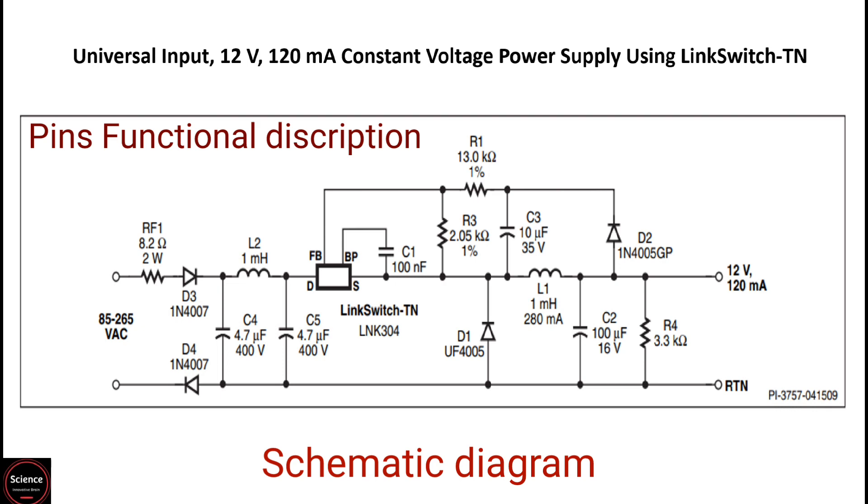On the bypass pin, a 0.1 µF external bypass capacitor must be connected for the internally generated 5.8V supply. During normal operation, switching of the power MOSFET is controlled by the feedback pin. MOSFET switching is terminated when a current greater than 49 µA is delivered into the feedback pin.